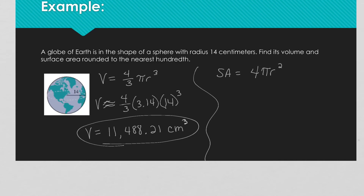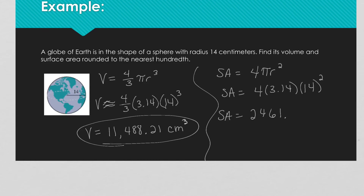Our surface area is 4 times pi times the radius squared. Using the squiggly equals since we approximated pi, and the units are centimeters squared for area.